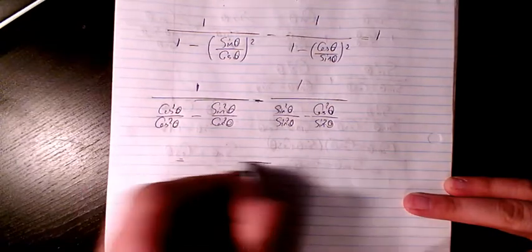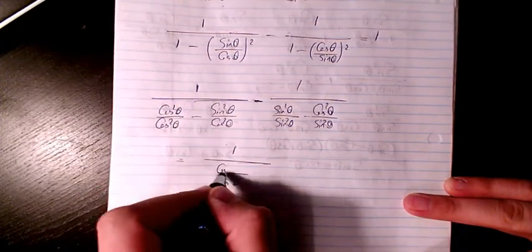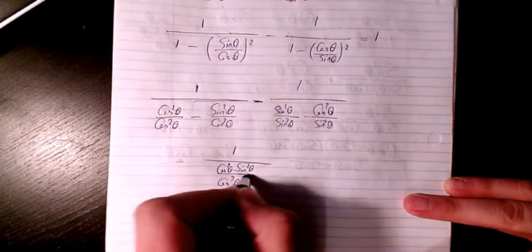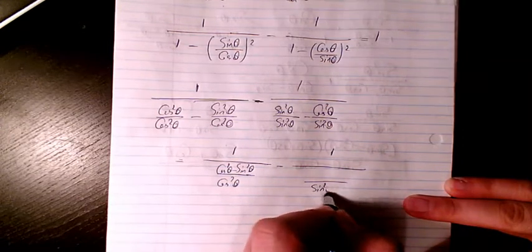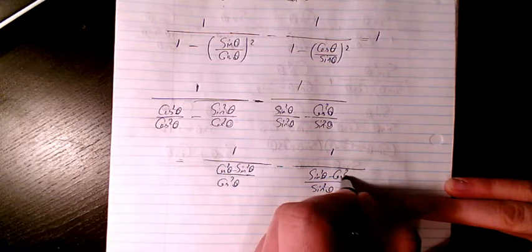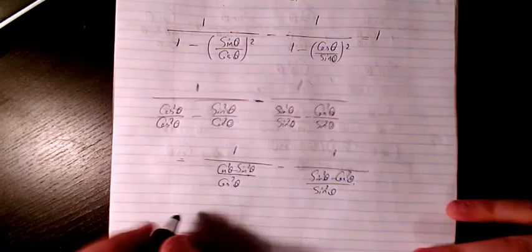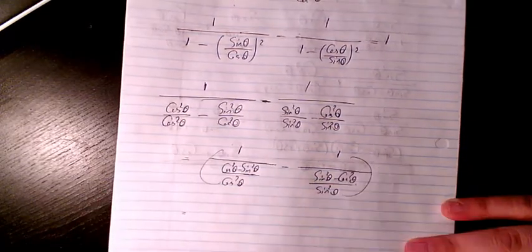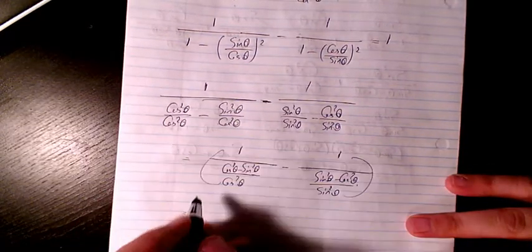Then here, I will have cosine squared theta over cosine squared theta minus sine squared theta. Here, we have 1 over sine squared theta minus cosine squared theta. And at the end, the denominator inside another denominator — we can move it to the top.